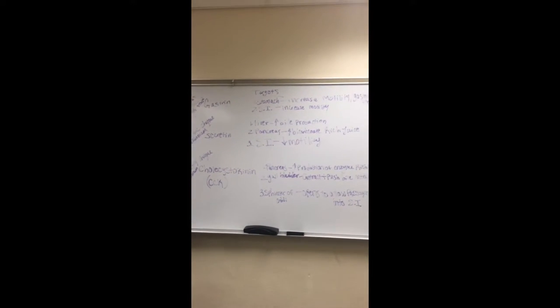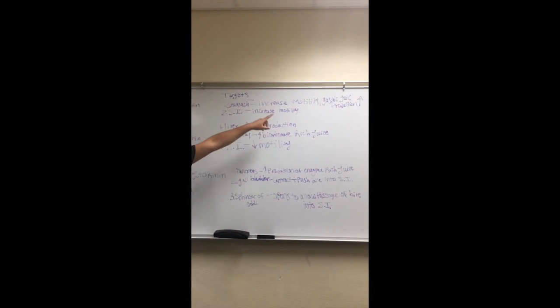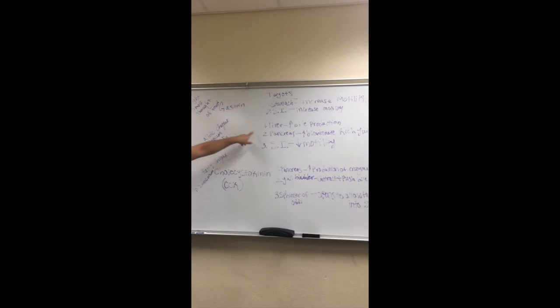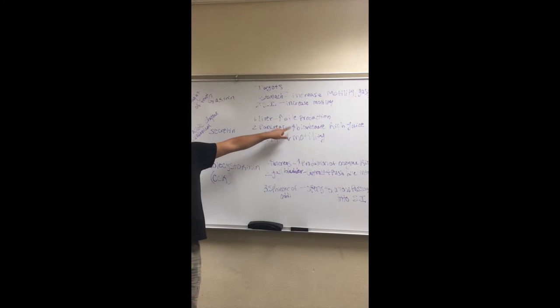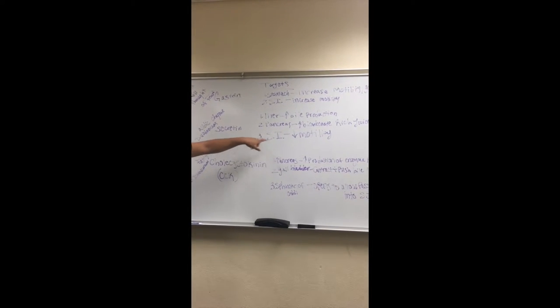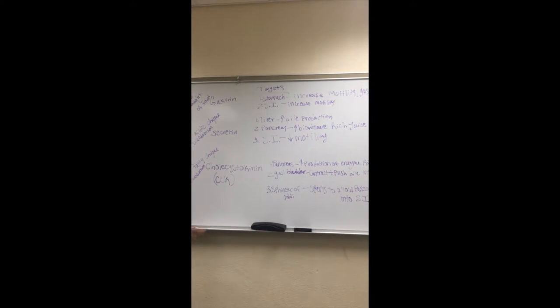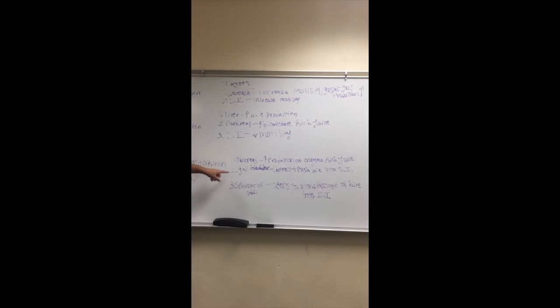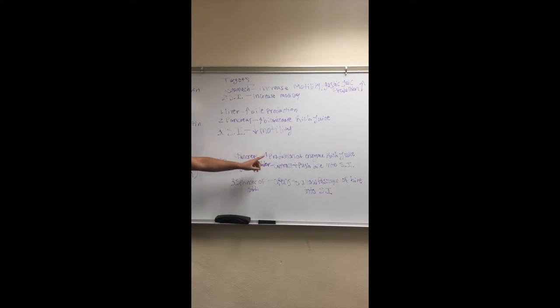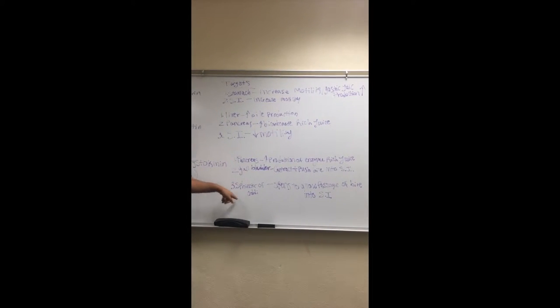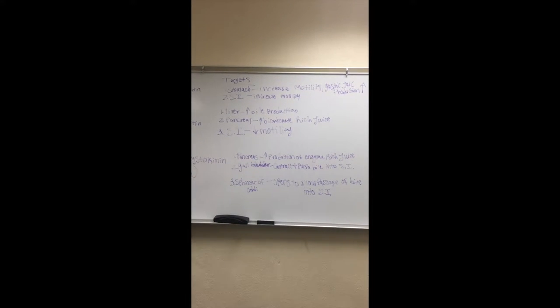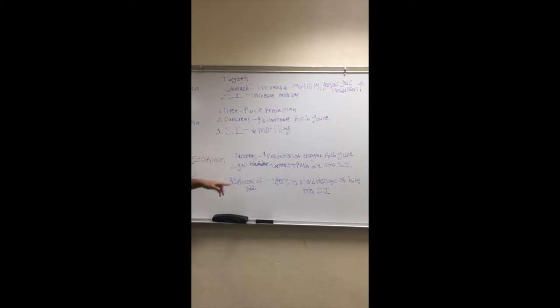Gastrin targets the stomach and the small intestine, which both increase motility — the rumbling and movement in your stomach. In the stomach, it also increases the production of gastric juice. In the liver, secretin increases bile production. In the pancreas, it increases the production of bicarbonate-rich juice, and in the small intestine it decreases motility. CCK targets the pancreas, gallbladder, and sphincter of Oddi. In the pancreas, it increases production of enzyme-rich juice. In the gallbladder, it makes it contract and push out bile into the small intestine. And the sphincter of Oddi opens up to allow passageways of bile into the duodenum for digestion.